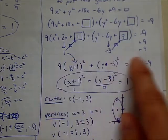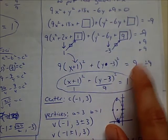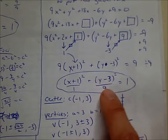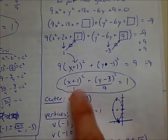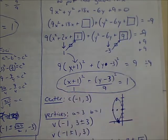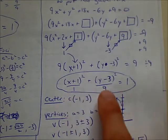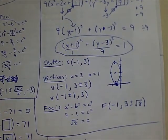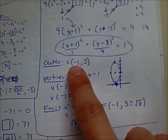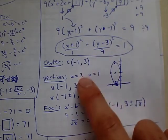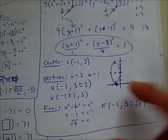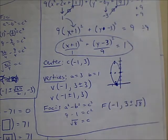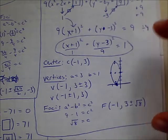The last step of completing the square is to factor. It always factors as (x ± something) squared and (y ± something) squared, where that something comes from the half-B values. So we get 9(x + 1) squared plus (y − 3) squared equals 9. Divide through by 9, and we end up with (y − 3) squared over 9 plus (x + 1) squared over 1 equals 1. Center is at (-1, 3). A is 3 in the Y direction, B is 1. Count up and down 3, left and right 1, then solve for C for the foci.